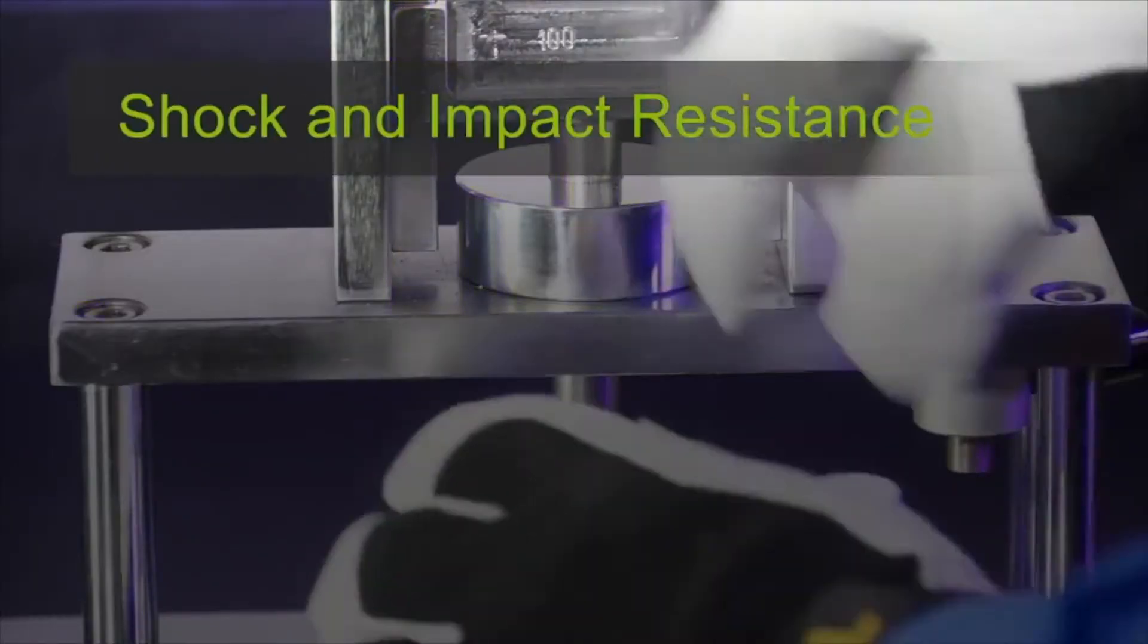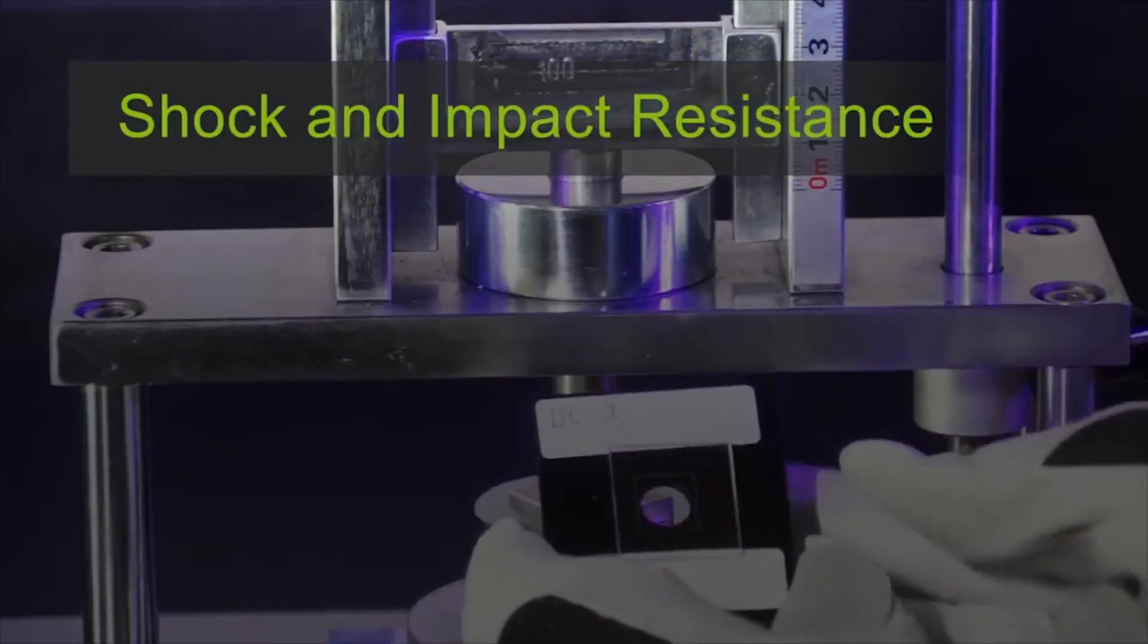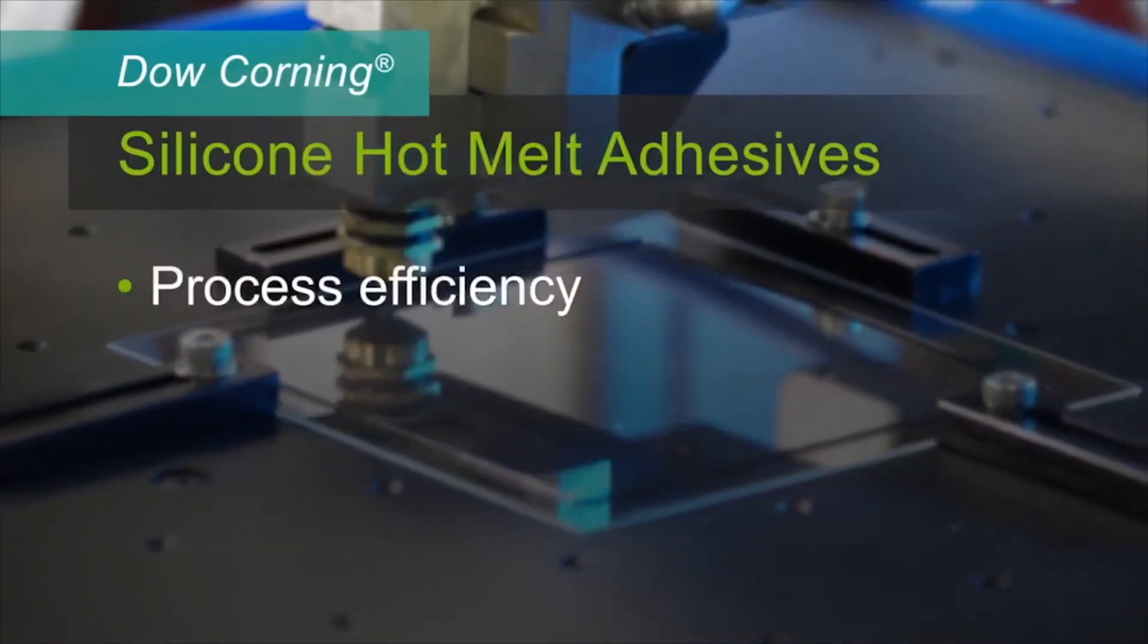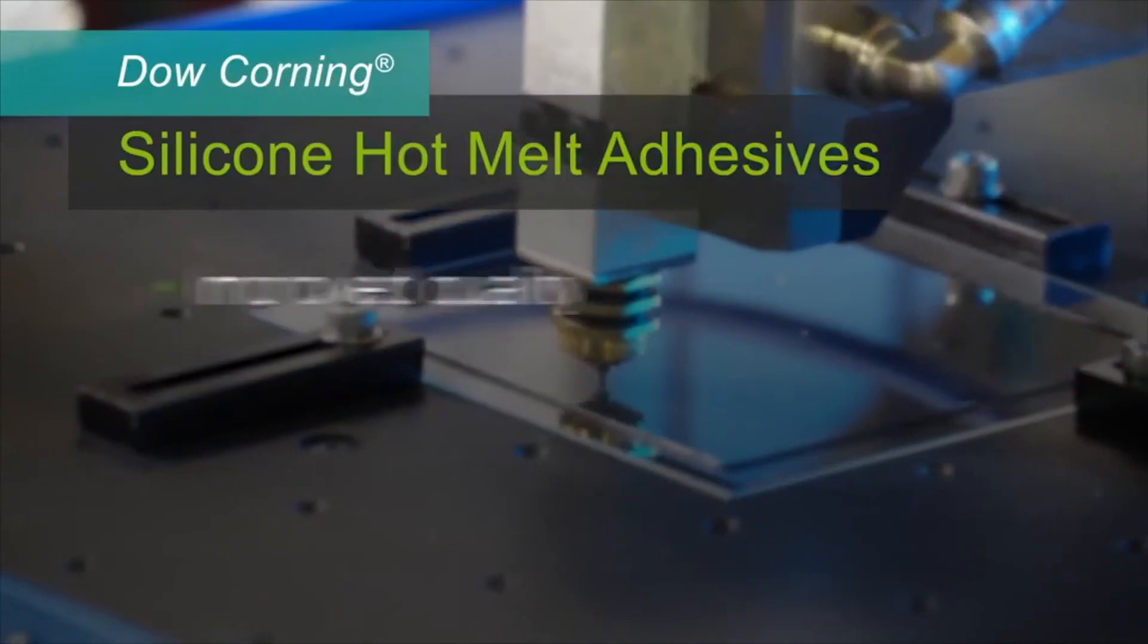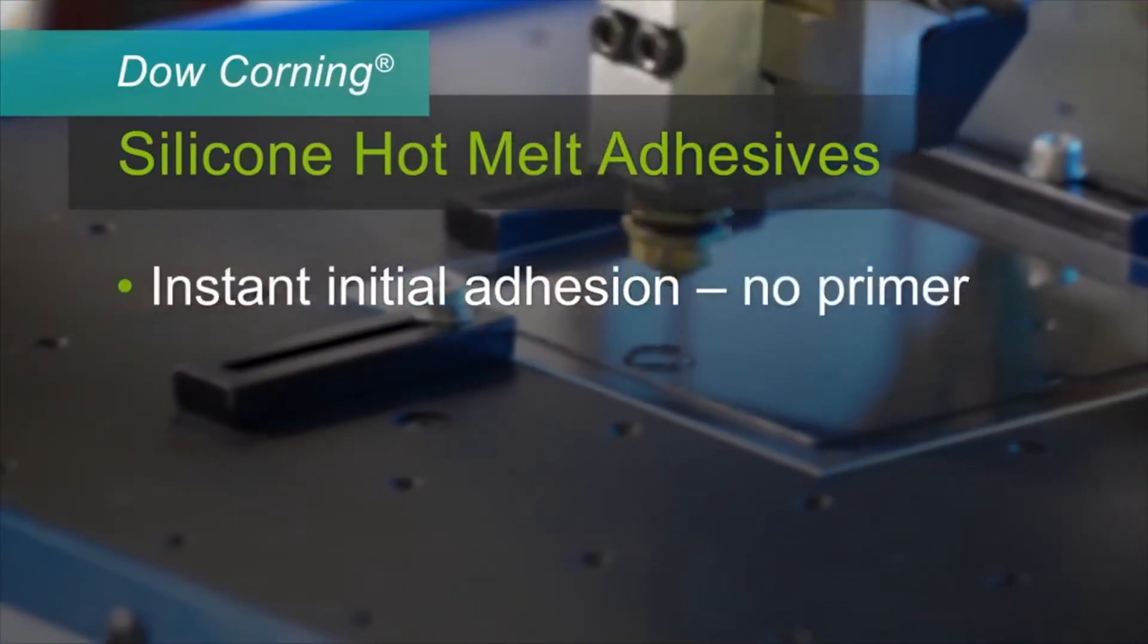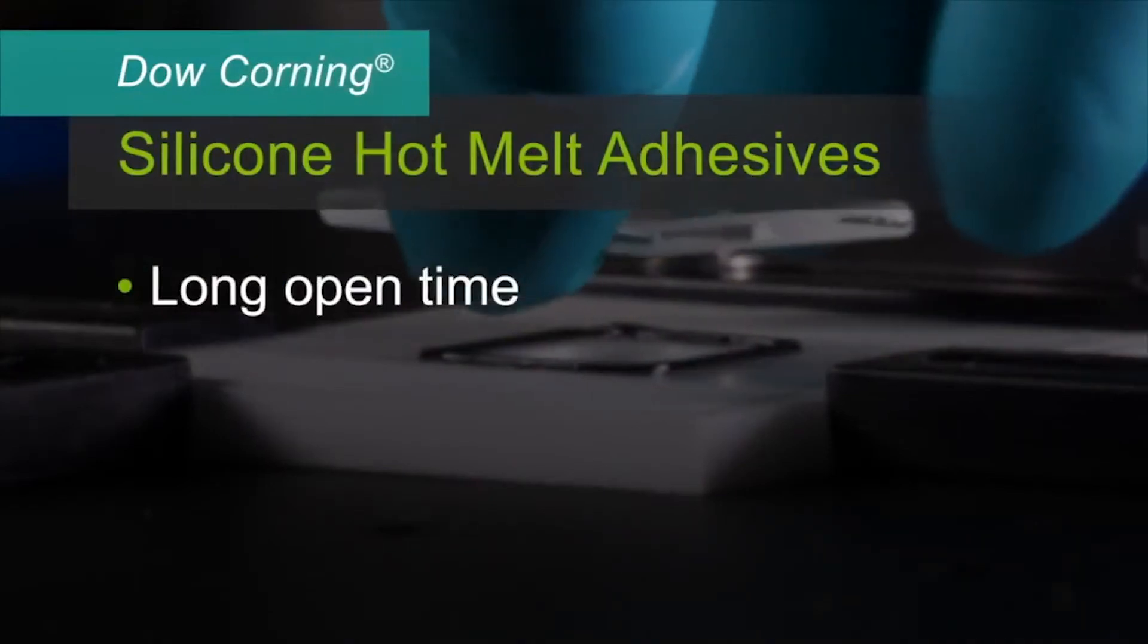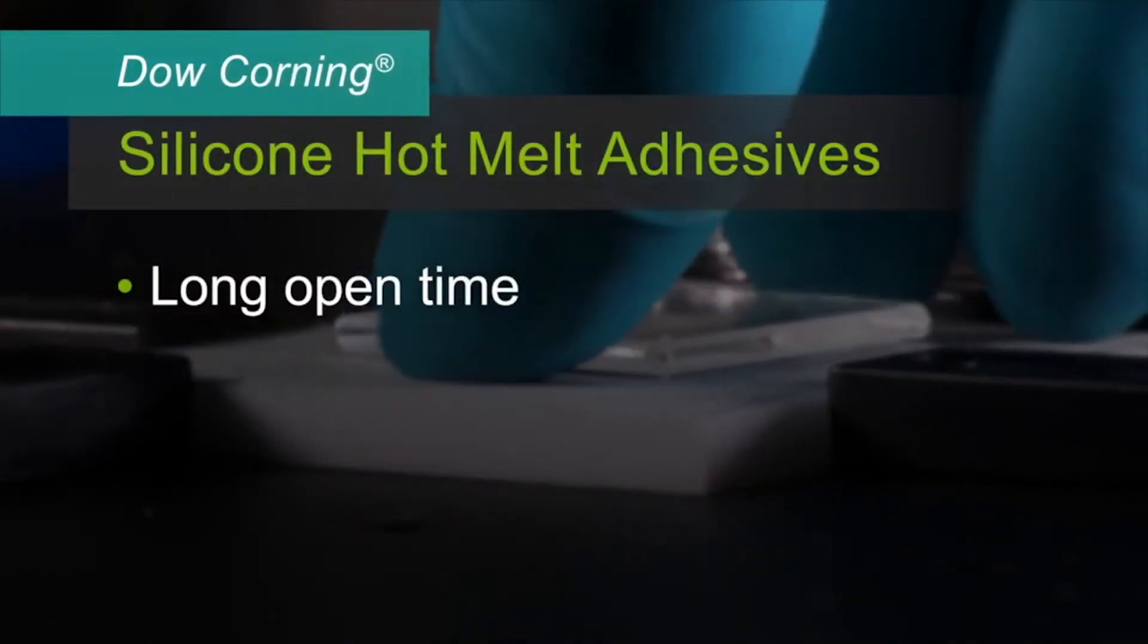Because of the flexibility of silicone, these adhesives are able to absorb impact energy. Dow Corning silicone hot melt adhesives have the potential to help improve process efficiency and quality. They offer excellent reliability, instant green strength without the need for primers, a long open time, which allows greater manufacturing flexibility and more time in the processing window.